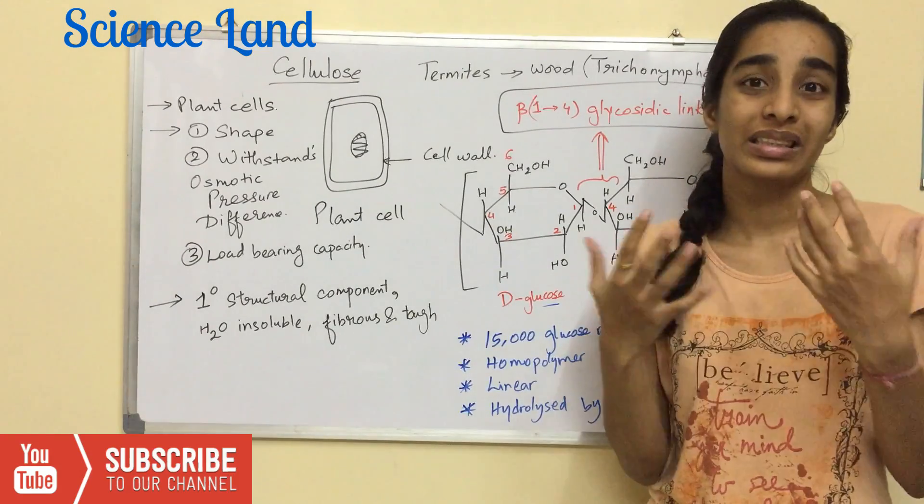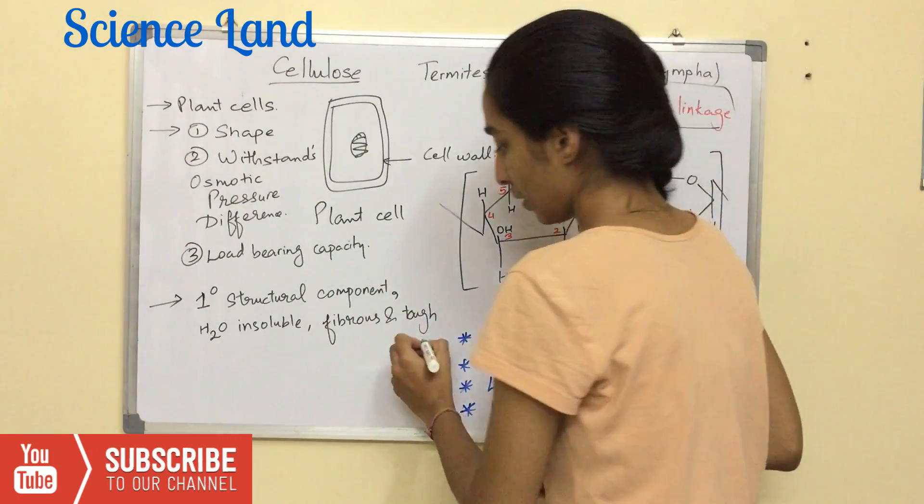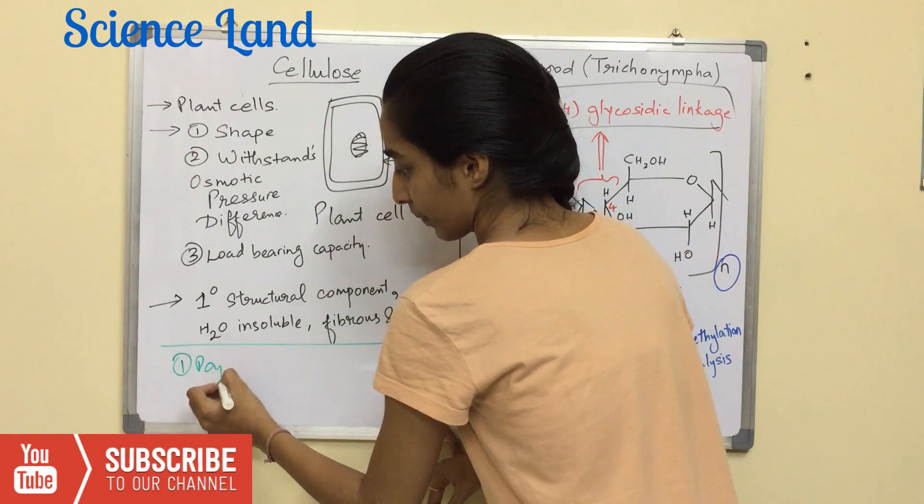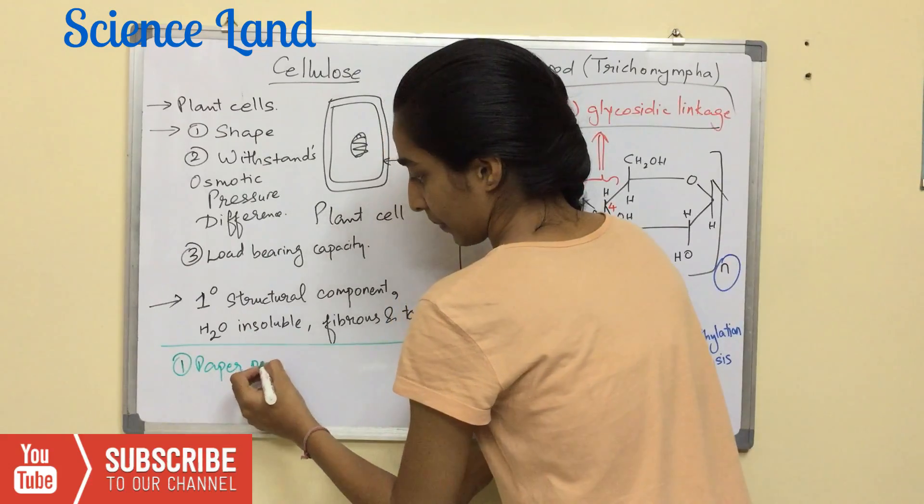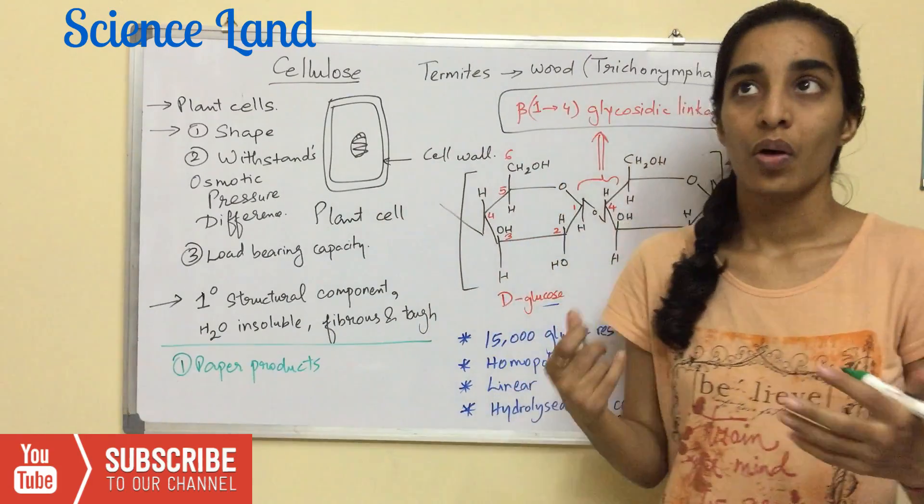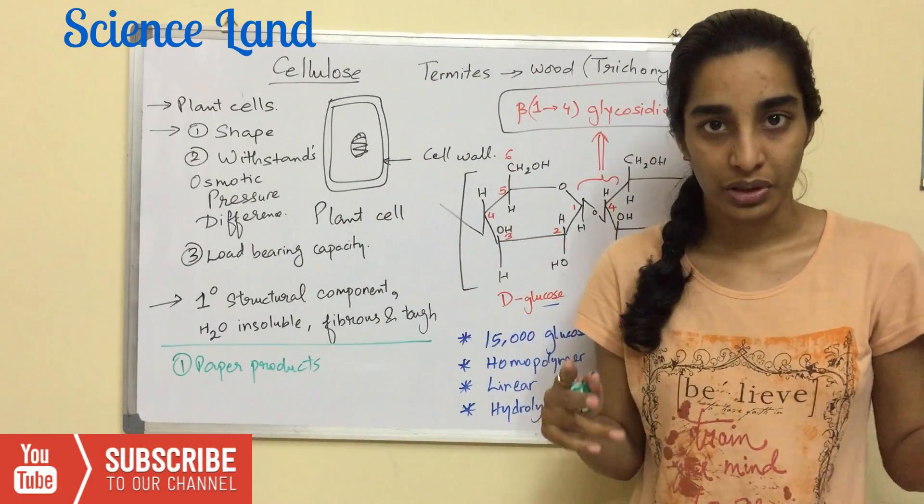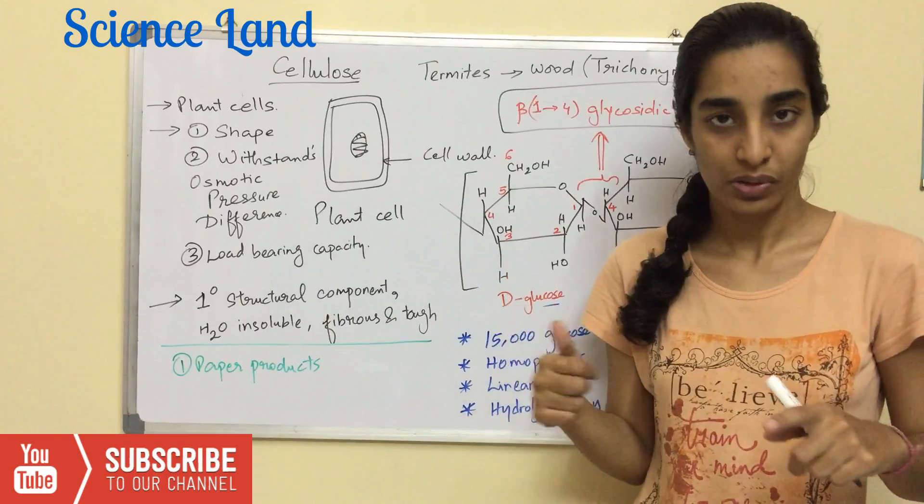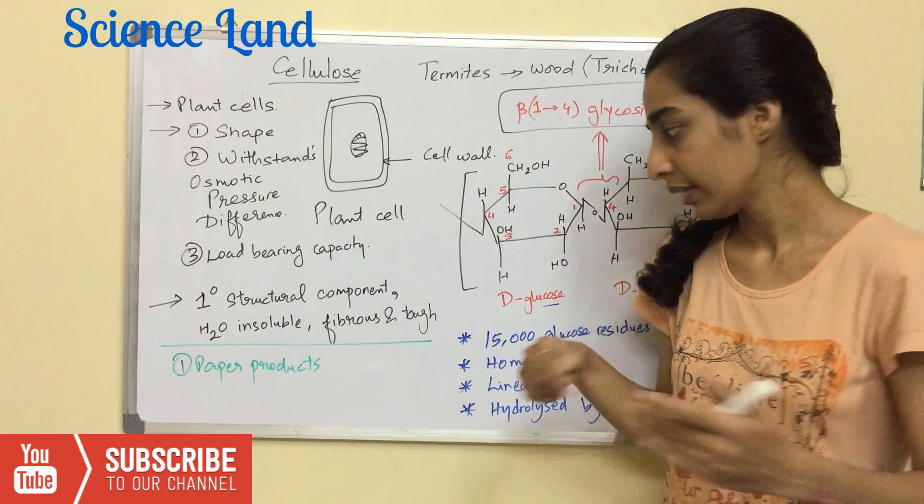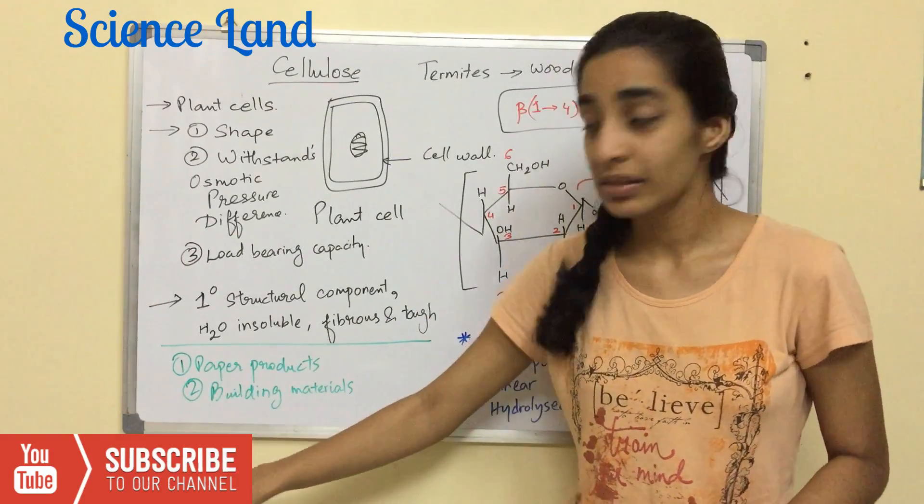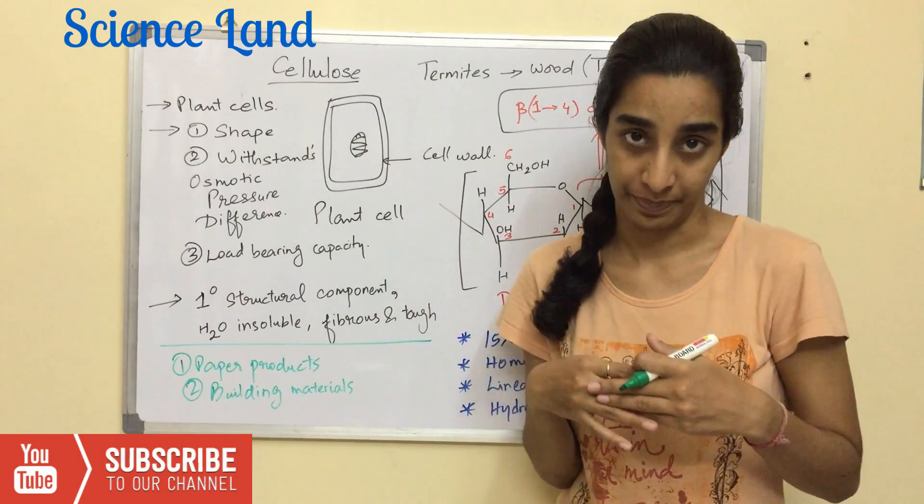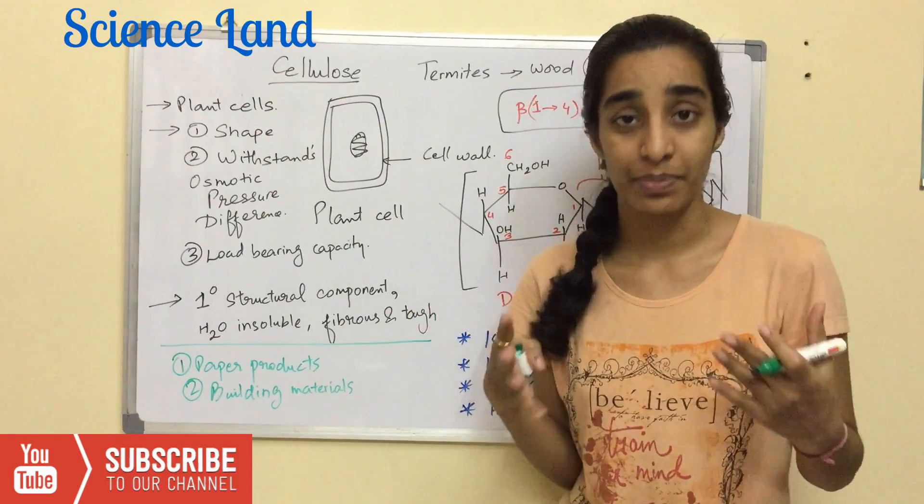We discussed about its uses to human beings. The first use or the application of cellulose is paper products. Paper has a major constituent as cellulose. It can be used in a paper-based industry. The second is building materials. You have cellulose insulation used in the building. This is nowadays becoming very popular.